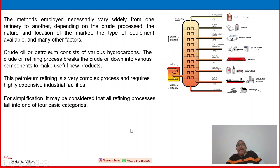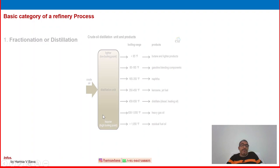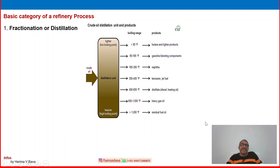Let us divide into some categories and understand how the basic refinery process works. For simplification, all refining processes may be considered to fall into one of four basic categories. Number one is fractionation, or distillation, or fractional distillation — already discussed a little bit earlier. Crude oil comes in, and based on boiling point difference, components are separated. The basic definition of distillation is liquid-liquid separation based on boiling point difference.